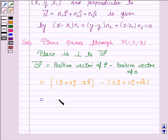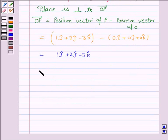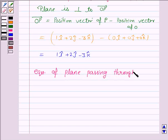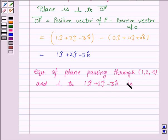And vector OP equals î + 2ĵ - 3k̂. Now the equation of plane passing through the point (1, 2, -3) and perpendicular to the vector î + 2ĵ - 3k̂ is given by